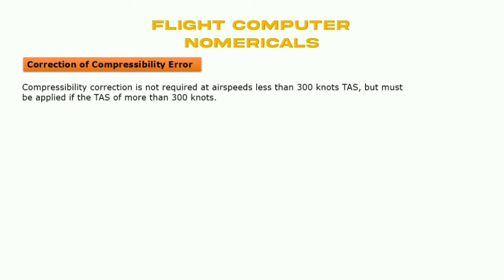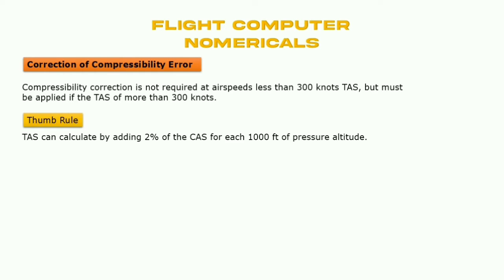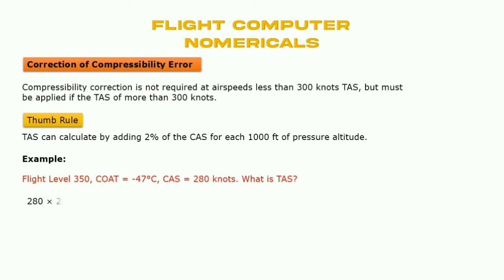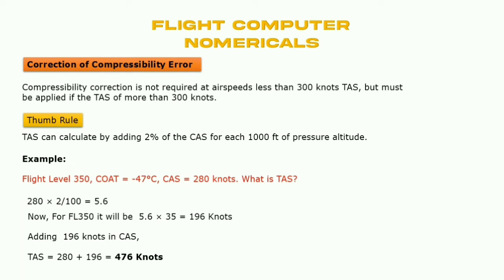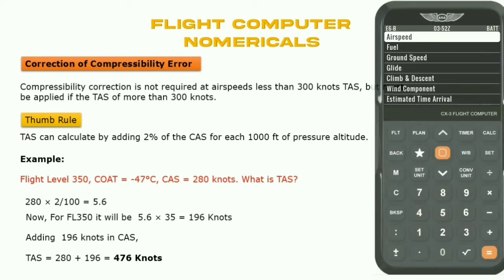Compressibility correction is not required at air speeds less than 300 knots TAS, but must be applied if TAS is more than 300 knots. The thumb rule is: TAS can be calculated by adding 2% of CAS for each 1,000 feet of pressure altitude. Example: Flight Level 350, outside air temperature minus 47 degrees Celsius, CAS 280 knots. 2% of 280 is 5.6. For FL350 that is 5.6 × 35 = 196. Adding to CAS gives TAS of 476 knots.